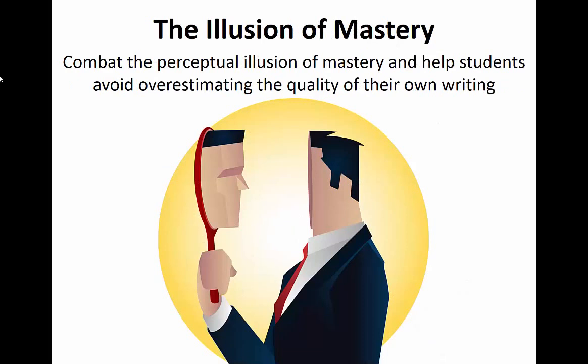The first important principle to understand is called the illusion of mastery. Research has shown that learners have an enormous capacity for self-deception when it comes to judging the quality of their own knowledge and skills. It takes practice and experience to gain the self-awareness to counteract this illusion of mastery.